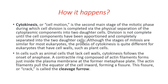Cytokinesis is also known as cell division. It is the second main stage of the mitotic phase, during which cell division is completed through the physical separation of the cytoplasmic components into two daughter cells. Division is not complete until the cell components have been apportioned and completely separated into two daughter cells. Although the stages of mitosis are similar for most eukaryotes, the process of cytokinesis is quite different for eukaryotes that have cell walls, such as plant cells.